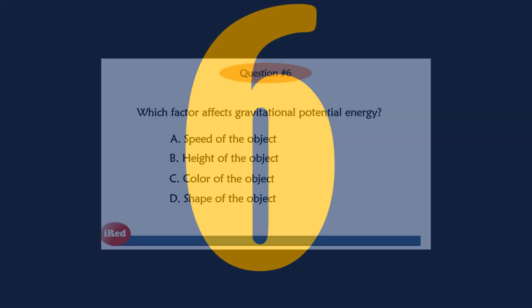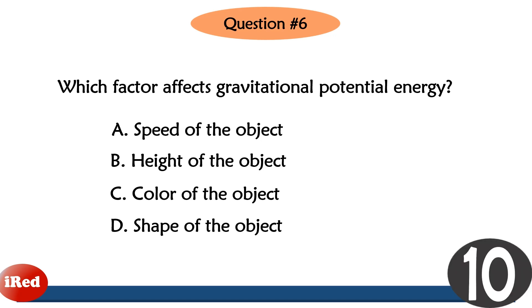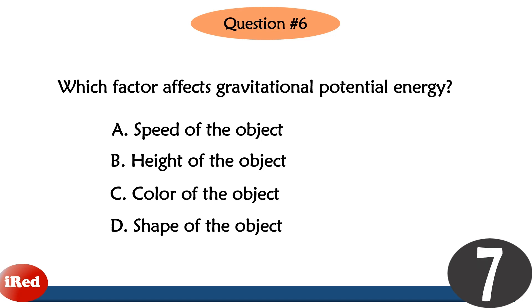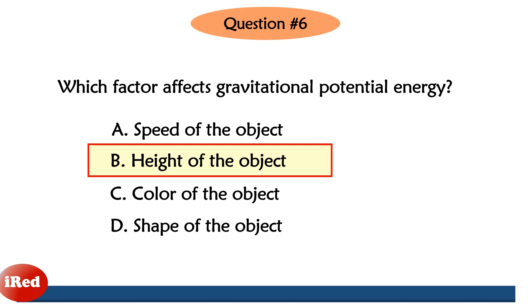Question number six: Which factor affects gravitational potential energy? Question number three, the correct answer is letter B, height of the object.